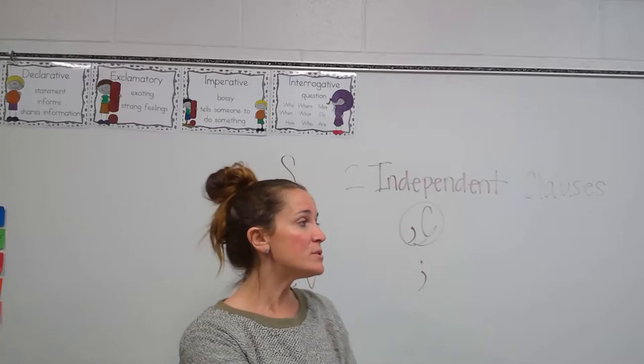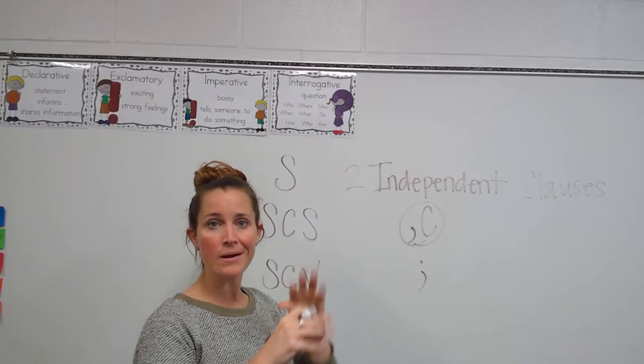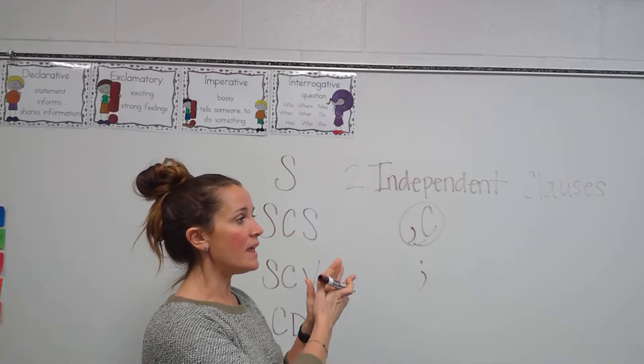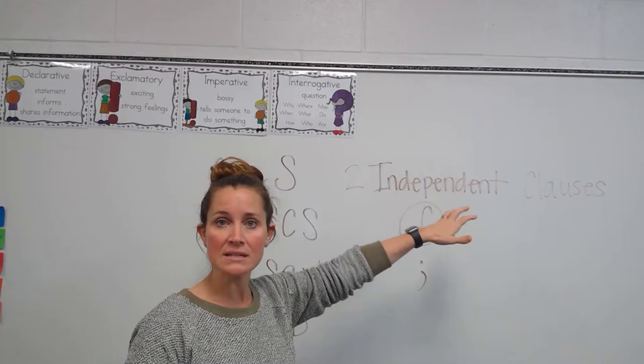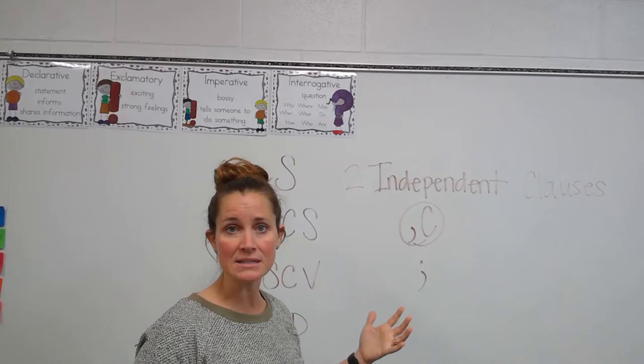Number two is also a compound sentence — two independent clauses joined by a comma and conjunction. We have 'we ate eggs for breakfast' as one independent clause, and 'we did not eat any pancakes' as another. They're joined with comma-but to make one compound sentence: 'We ate eggs for breakfast, but we did not eat any pancakes.'